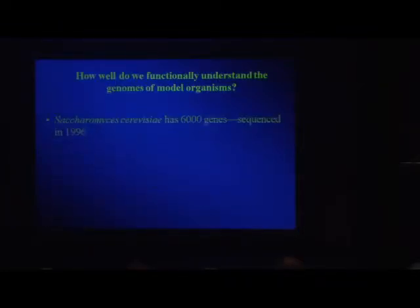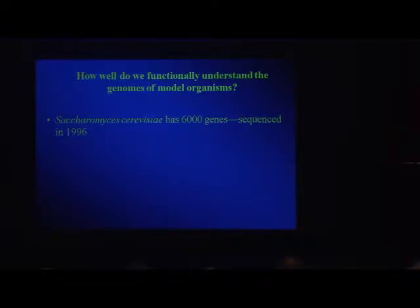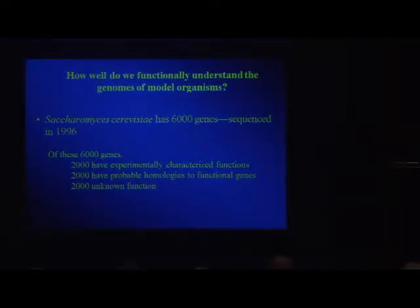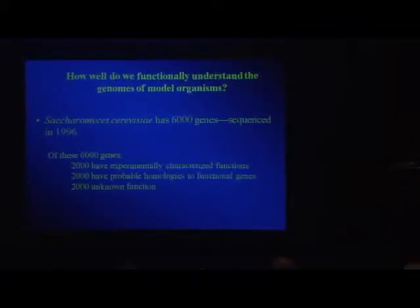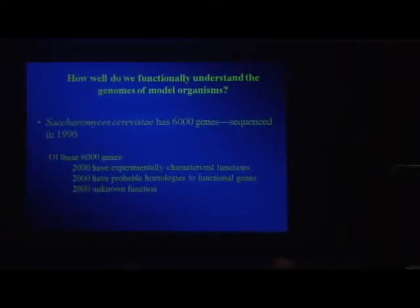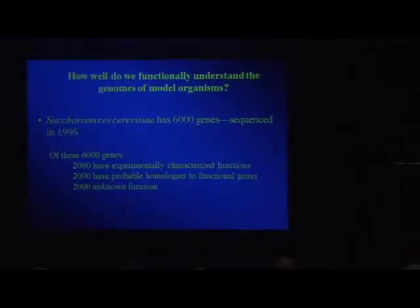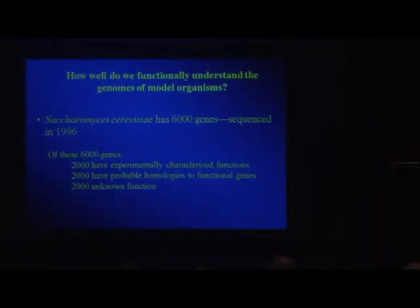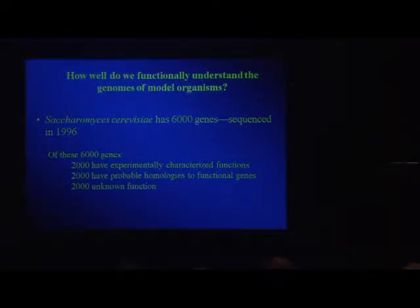How well do we understand the function of genes in model organisms on which we base a lot of our inferences? Take Baker's yeast, Saccharomyces cerevisiae, which has only 6,000 genes — sequenced in 1996. For this organism, only 2,000 — a third — have been experimentally verified through ablation and looking for phenotypes. Another 2,000 have some reasonable homologies with other functionally characterized genes, but a full third of the yeast genome, 12 years after sequencing, is still unknown, even though these genes are maintained by natural selection and clearly not being pseudogenized.